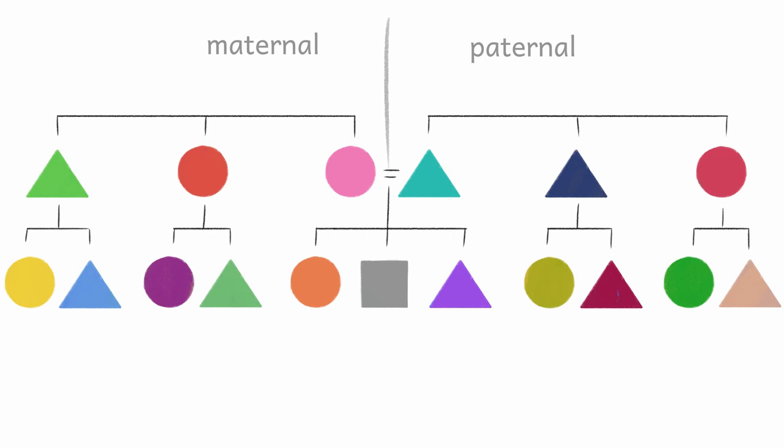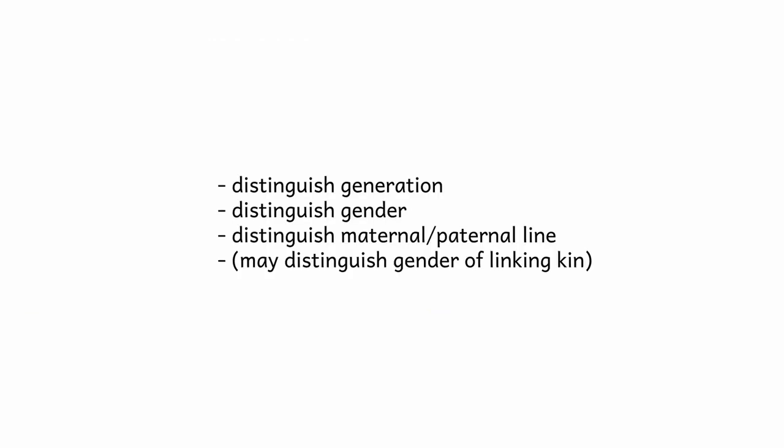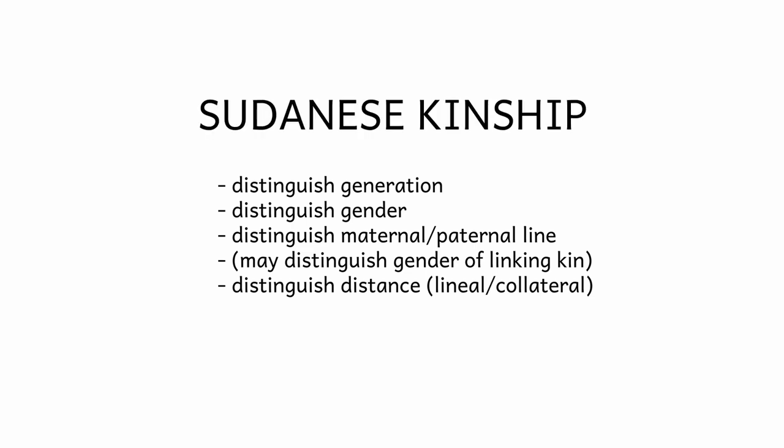In this system, every kind of relationship has its own descriptive term, distinguishing by generation, gender, maternal and paternal, and collateral and lineal. This is the Sudanese kinship system, and it's the most descriptive of the six classic groups.